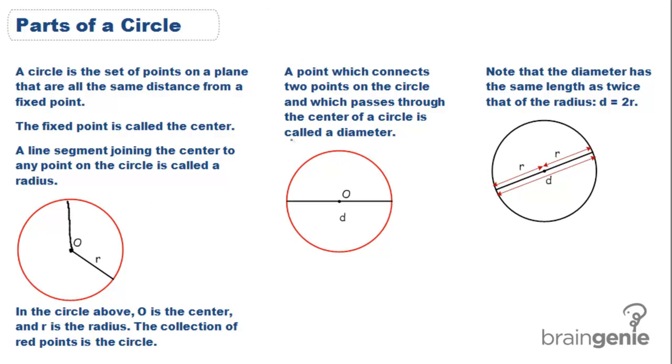A point that connects two points on the circle and that passes through the center of the circle is called the diameter. You'll notice that the diameter has the same length as twice the radius. That's because essentially what it is is two radii, one from here and one from there.